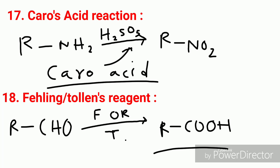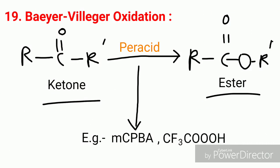Then Fehling's and Tollens' reagents — these are good oxidants which convert any aliphatic aldehyde to the corresponding acid. Here an aliphatic aldehyde is converted to an aliphatic carboxylic acid.